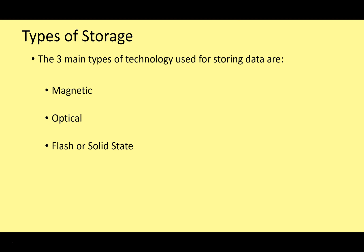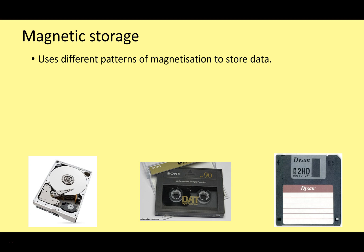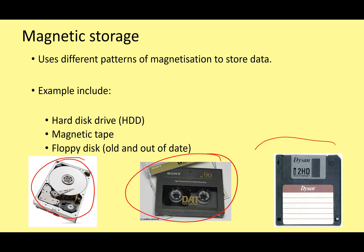Let's look at some types of storage. The three main ones are magnetic, optical, and what is called flash or solid state. Magnetic storage is the one we're all really familiar with — it uses different patterns of magnetization to store data on the material. Examples include the hard disk drive, cassette tapes, magnetic tapes, and even the old-style floppy disk drives that were very popular in the recent past.